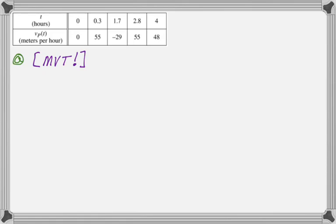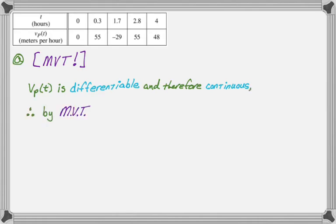Since it's a mean value theorem problem we want to state the necessary conditions. We're given that vP(t) is differentiable, and since it's differentiable we know that it must be continuous. So vP(t) is differentiable and therefore continuous. That's what we need for the mean value theorem.